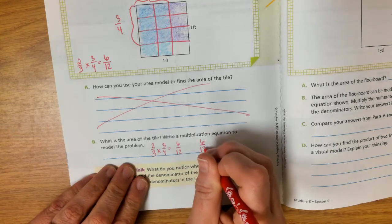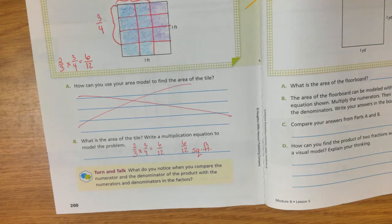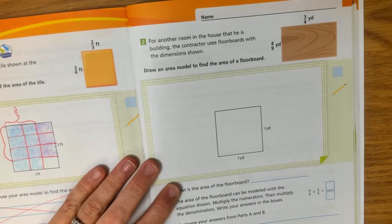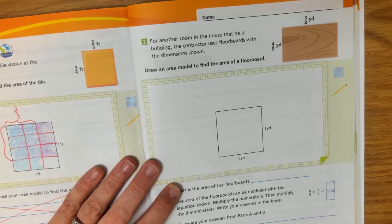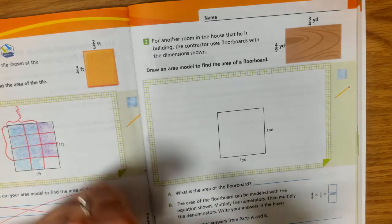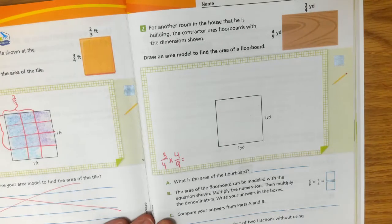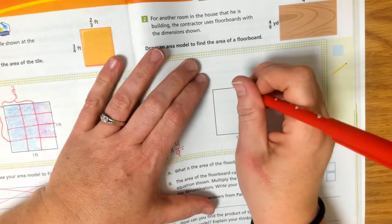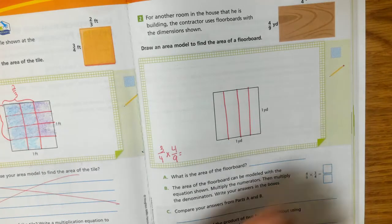So the area is six twelfths square feet, because we're looking for area. Remember, we always have square in front of the unit, the measurement. OK? Alrighty. Number two. For another room in the house that he is building, the contractor uses floorboards with the dimensions shown. So the floorboards are three fourths by four ninths. So we need to draw an area model to find the area of the floorboards. So we want three fourths by four ninths. So, three fourths. So I'm going to break it in half. And then half again, so that way I have my fourths.